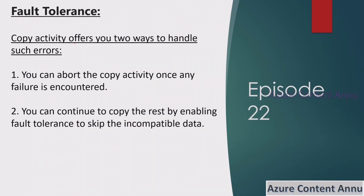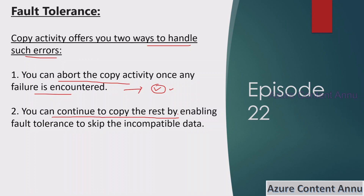Copy activity offers two ways of handling such errors or bad data. First, we can abort the copy activity completely once the failure is encountered — this way no bad data enters the sink, but even the good data will not make it. The second option is to continue copying the rest of the good data by enabling the fault tolerance option and skipping the incompatible data.